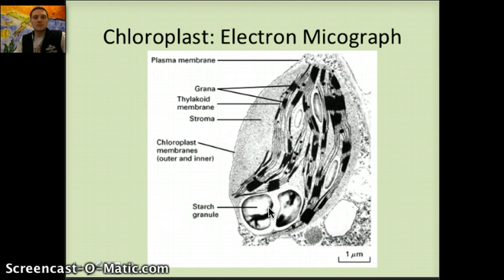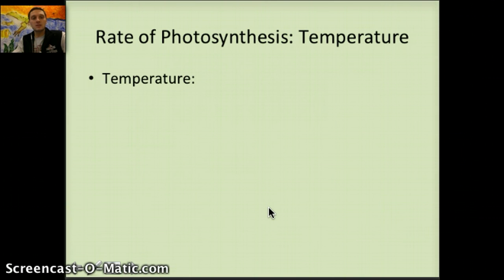To finish up this video today, we're going to look at a couple of different factors that affect the rate of photosynthesis. And the first being temperature. Temperature obviously can affect the rate we've talked about in the past: if the temperature increases, it can increase the rate of an enzyme reaction up to a certain point. Essentially the same thing with photosynthesis, because photosynthesis is using different enzymes to catalyze these reactions.